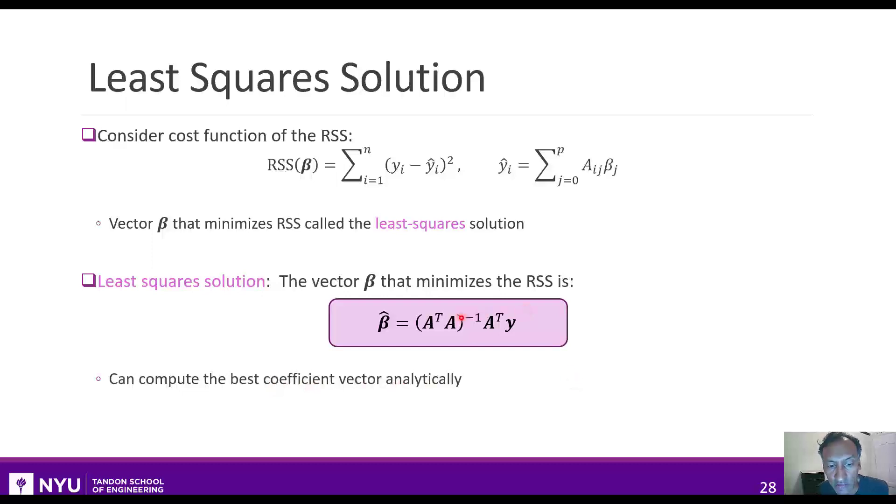This means that you can compute the best coefficient analytically. Now, usually this is too hard to do by hand, but you could easily do this for fairly large p on any computer program. Basically, you just have to solve a linear set of equations, and I'll talk about this in the next section. Now, we're going to prove this below in the next videos, but let me just go, before we do that, a couple more points.